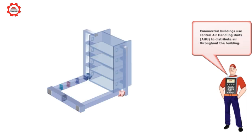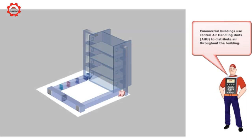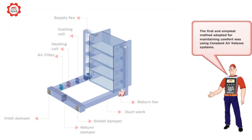Commercial buildings use central air handling units to distribute air throughout the building. The first and simplest method adopted for maintaining comfort was using constant air volume systems.